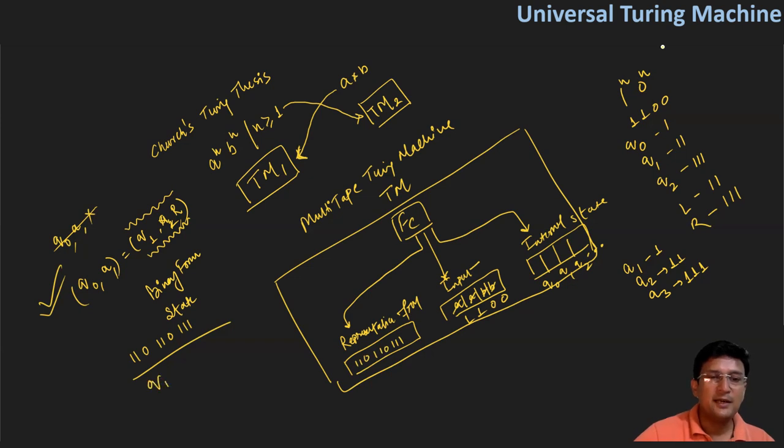Similarly, assume that you are in Q1 state, and the input you get is a1. And corresponding to this, the movement you decide is that you have to move to Q2 state, and then the symbol has to be changed to a3, and you have to move towards the left.